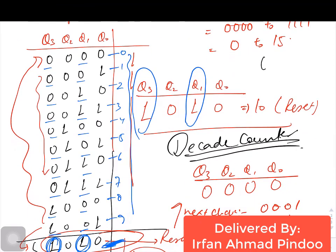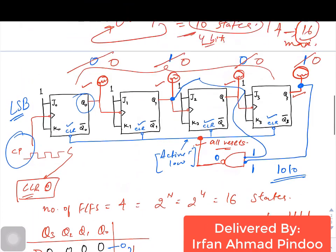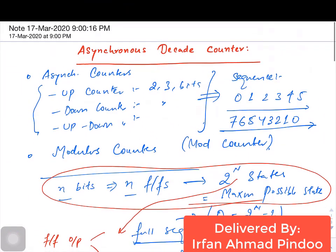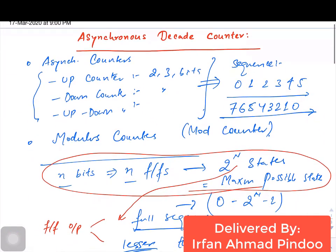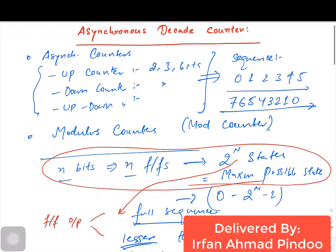This type of counter is called a decade counter because it counts from 0 to 9 and the total number of states are 10. You can revise this topic and in case you have doubts, raise them in the comment section. Keep revising your notes, god bless you all, thank you.